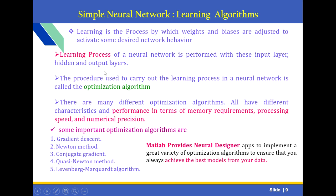The learning process of a neural network is performed with the input layer, hidden layers, and output layers. The procedure used to carry out the learning process in a neural network is called the optimization algorithm. There are many different optimization algorithms with different characteristics and performance in terms of memory requirements, processing speed, and numerical precision. Some important optimization algorithms available in MATLAB include the gradient descent method, Newton method, conjugate method, quasi-Newton method, and Levenberg-Marquardt algorithm. MATLAB provides a neural network designer application to implement a great variety of optimization algorithms to ensure you always achieve the best models from your data.